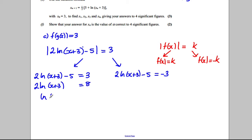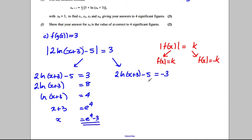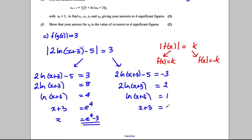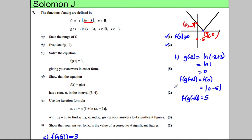For each equation: add 5 to both sides, divide by 2, take exponentials, then subtract 3. Doing this for both equations gives us our two exact answers for F(G(x)) = 3.